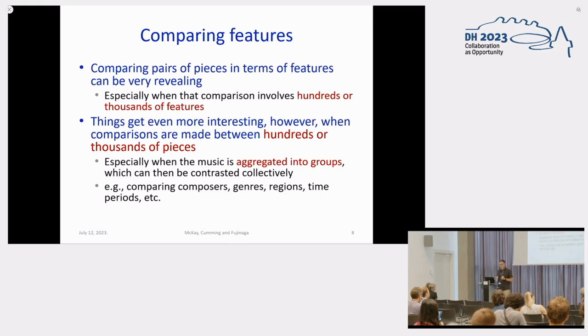But what's more useful is when you actually have not just a few features, but hundreds or thousands of features. That way, you can really explore music in a fairly sophisticated way. Things get even more interesting when you have not only two pieces that you're comparing, but hundreds or thousands of different pieces. So you have this ability to group those pieces into classes or categories of interest. You could say all of these pieces by this composer go here, all these other pieces by this composer go there, and you can model compositional style. Similarly, you can model genre, you can model regional style, you can look at how features change over time. There's a lot of different possibilities there.